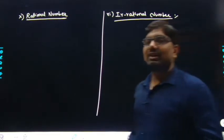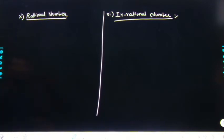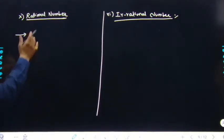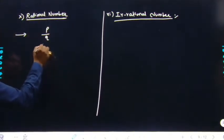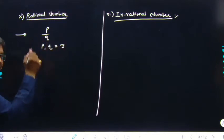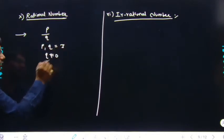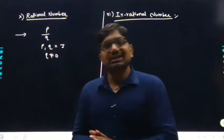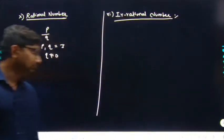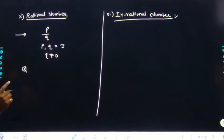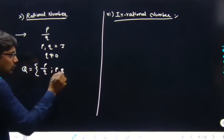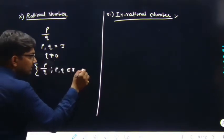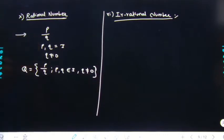Rational number: कोई भी number जो P/Q form में लिखा जा सकता है, जहाँ P और Q integers हों और Q ≠ 0 — ऐसे numbers को rational numbers कहते हैं। Rational numbers को Q से represent किया जाता है: Q = {P/Q : P, Q ∈ integers, Q ≠ 0}।